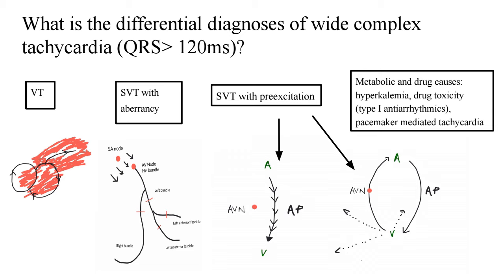In ventricular tachycardia, there is re-entry around the myocardial tissue. Usually, if there is scar tissue in the myocardium secondary to myocardial infarction, then VT can set in. There are also other causes seen in idiopathic ventricular tachycardias. SVT can occur with wide complex tachycardia through various mechanisms. When we talk about SVT with aberrancy, if the baseline ECG already has a right or left bundle branch block, then the same block will be manifested during supraventricular tachycardia as well — that is one reason why SVT with aberrancy occurs.